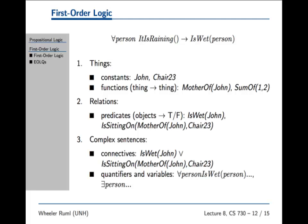So is sitting on mother of John chair of 23, that's actually a valid sentence in first order logic consisting of a predicate and a function and a constant and a constant. Everyone parsing this correctly? Then plus on top of that we got all the usual connectives. So we can say is wet John or is sitting on mother of John chair of 23. Now why do I love first order logic? It's because of these folks right here called quantifiers. There are two of them. There's for all and there's there exists.